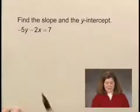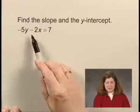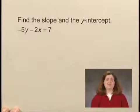In this exercise, we'll find the slope and y-intercept from an equation of a line. The equation given is -5y - 2x = 7.